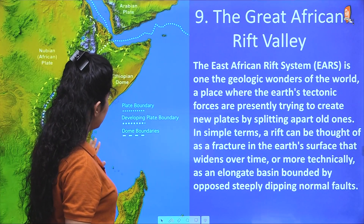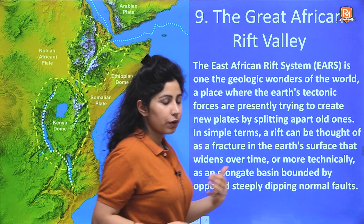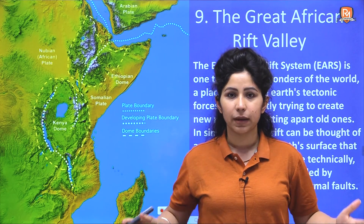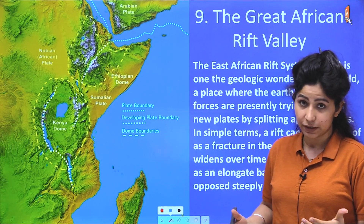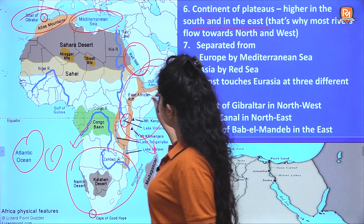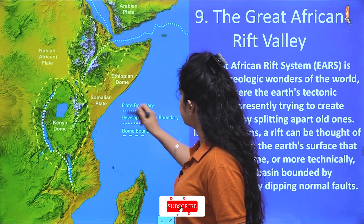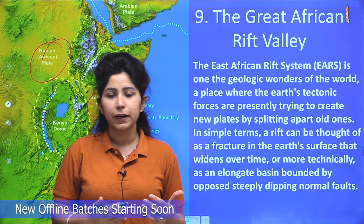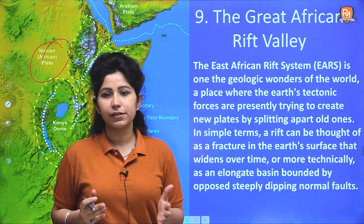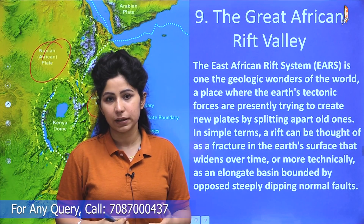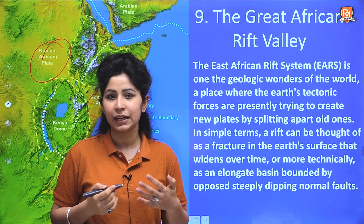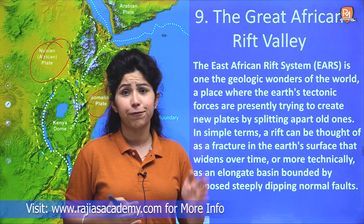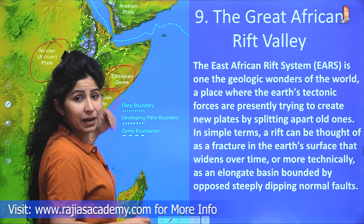Moving on, we will talk about the Great African Rift Valley. A Rift Valley, as the name indicates, is a point where tectonic plates are going apart. In the eastern side of Africa, we have the Great African Rift Valley where tectonic plates are drifting apart, creating a very different kind of geological structure. The East African Rift system is one of the geological wonders of the world — a place where the earth's tectonic forces are presently trying to create new plates by splitting apart the old ones. A rift can be thought of as a fracture in the earth's surface that widens over time.